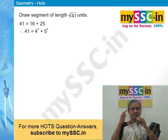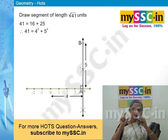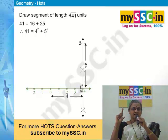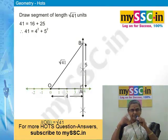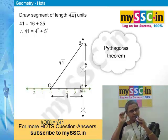We can split 41 into 16 and 25, since 16 + 25 = 41. Therefore, on the number line, draw one side of 4 units, take a perpendicular at that point, mark 5 units on the perpendicular, and join that point to the origin. The length of that hypotenuse will be √41. Here again we are using the Pythagorean theorem.